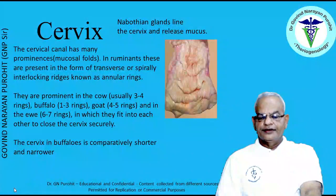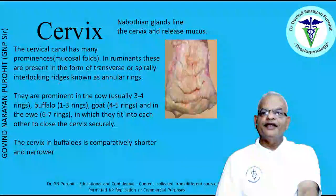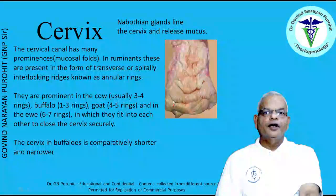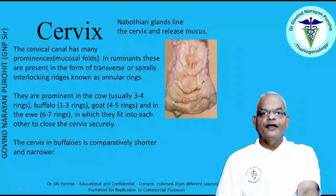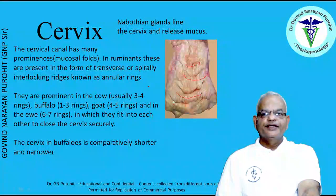The cervical canal has many prominences. In ruminants, the mucosal folds are present in the form of transverse or spirally arranged parts known as annular rings. These are prominent in the cow — usually three to four rings — one to two in buffalo, four to five in goats, and six to seven rings in the sheep, in which they fit into each other to close the cervix securely. The cervix in the buffalo is comparatively shorter and narrower.